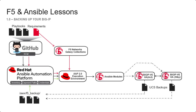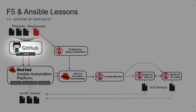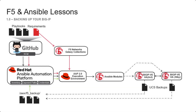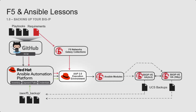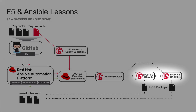Welcome to F5 and Ansible Lessons: backing up your BIG-IP. Using Ansible Automation Platform, we will have a pre-created inventory credentials, and we'll be exposing paths for our backups. We'll also be connecting to GitHub for our repositories, using a requirements file to pull down the F5 Networks Galaxy collections, and then executing the code to back up the BIG-IP.